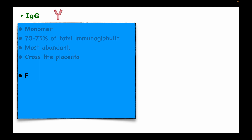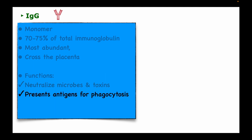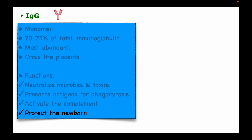The functions of immunoglobulin G include neutralizing microbes and toxins, presenting antigens for phagocytosis, activating the complement system, and protecting the newborn. Because immunoglobulin G can cross the placenta, Rh-negative antibodies in an Rh-negative mother can also pass through to the fetus.